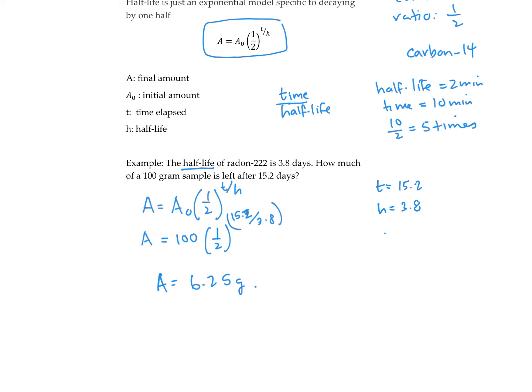So just a quick mental check. 15.2 divided by 3.8 is 4. So it's going to reduce in half four times. So the original amount was 100. It's going to reduce in half four times, because 15.2 divided by 3.8 is 4. And our final answer was 6.25 grams.